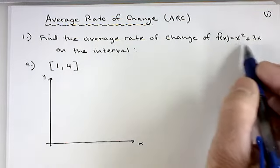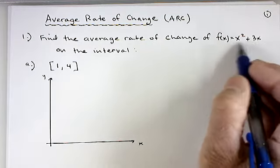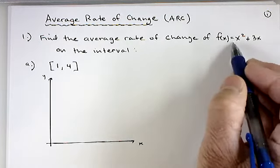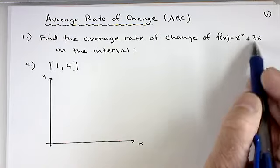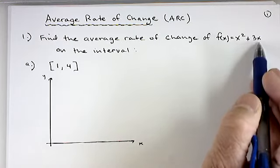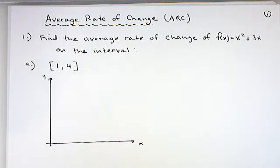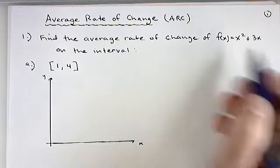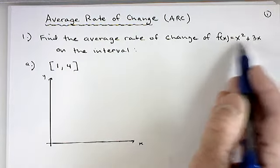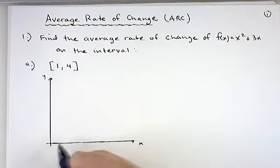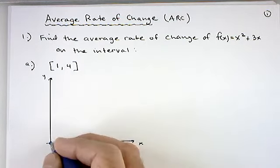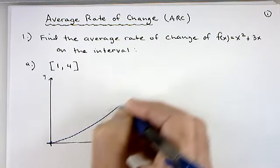You should know this is the graph of a parabola. It's not one of the simple shifting cases because of the plus 3x term, so it's not just your base graph shifted. For now, let's be satisfied that it is a parabola. If you plug in zero you get zero, so it goes through the origin, and we know it's an upward parabola that curves upward.